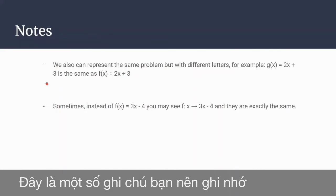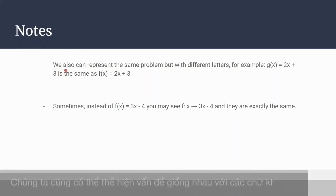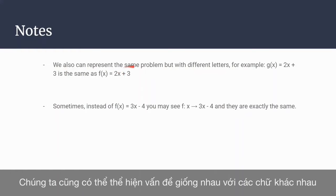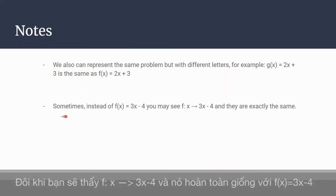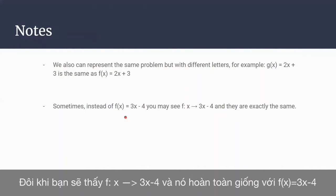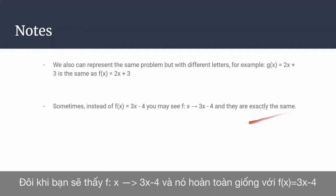This is some note you should remember. We can also represent the same problem but with different letters. For example, g(x) equals 2x plus 3 is the same as f(x) equals 2x plus 3. And sometimes, instead of f(x) equals 3x minus 4, you may see f·x(r) equals 3x minus 4, and they are exactly the same.